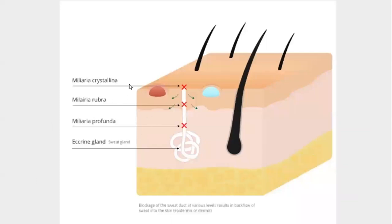This slide shows the different levels of obstruction of the sweat duct in the three kinds of miliaria. In miliaria crystallina it is at the stratum corneum, in miliaria rubra it is intra-epidermal, and in miliaria profunda it is intradermal.